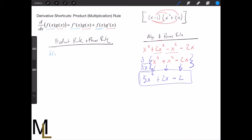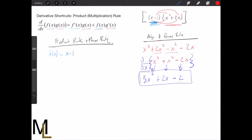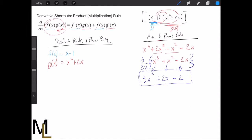...this first function over here, so call this one x - 1. The second function we'll call g(x), so that we're matching the format. So g(x) is equal to x² + 2x. This one is g(x), and the x - 1 is f(x).